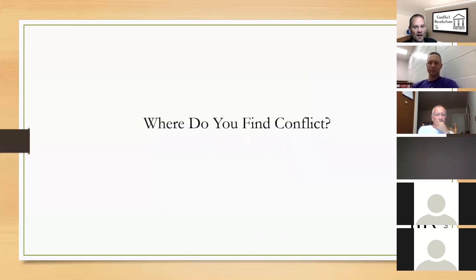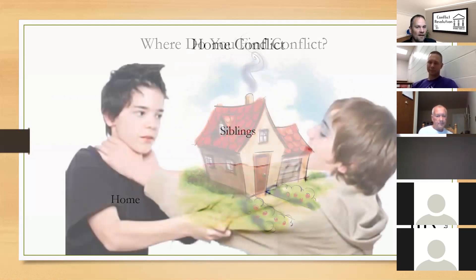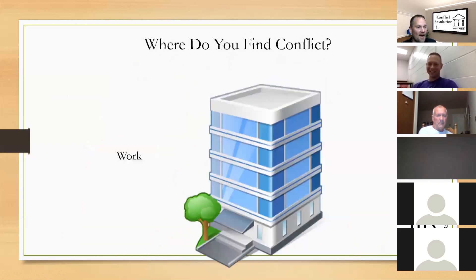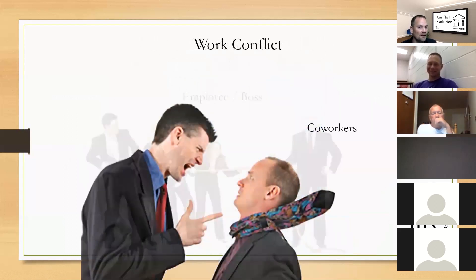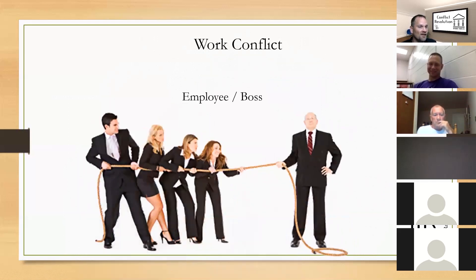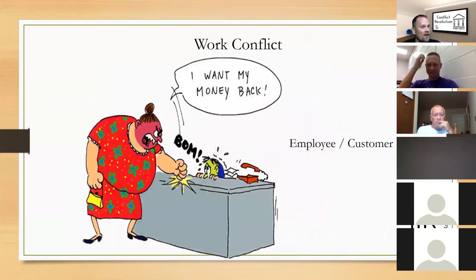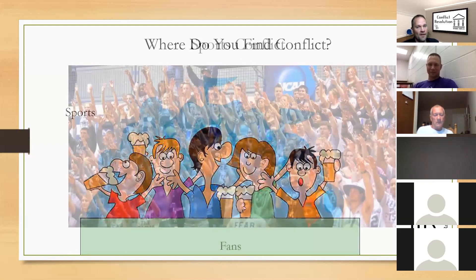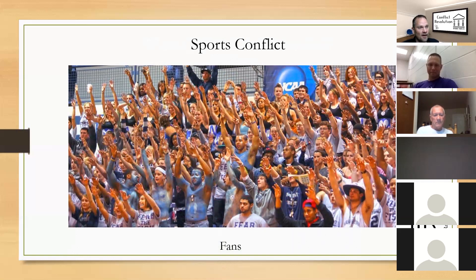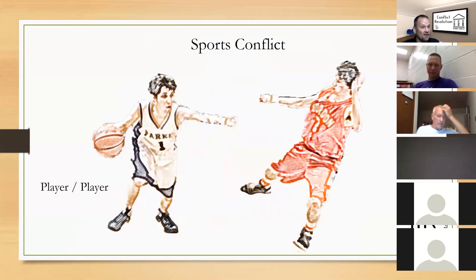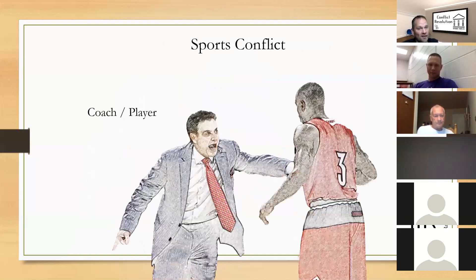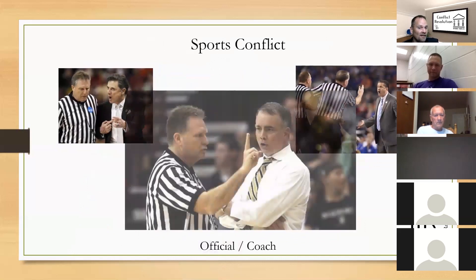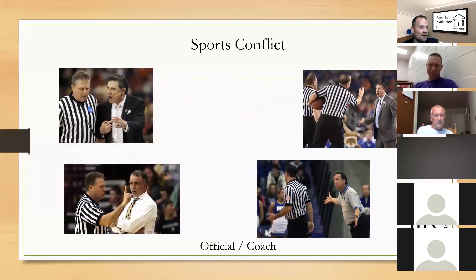Where do we find conflict? In general, we can find it at home — between siblings, between a parent and a child. It can happen at work with co-workers, with your boss, with an employee or a customer. But we can also find it in sports — basketball specifically, but really every sport. With fans, with players against players, between coach and player, and most commonly between an official and a coach.